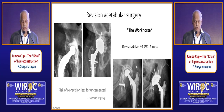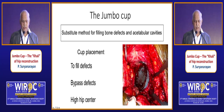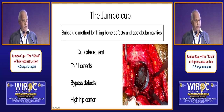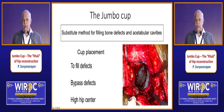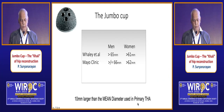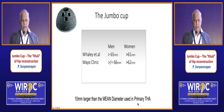So what is the Jumbo Cup? It is not a device — it is a concept. A method for filling bone defects and acetabular cavities by positioning the cup appropriately to fill or bypass defects, sometimes achieving this by raising the center of hip rotation. For definition, Whaley and co-workers defined it as cup size more than 65 mm in men or 61 mm in women; Mayo Clinic uses 66 and 62.